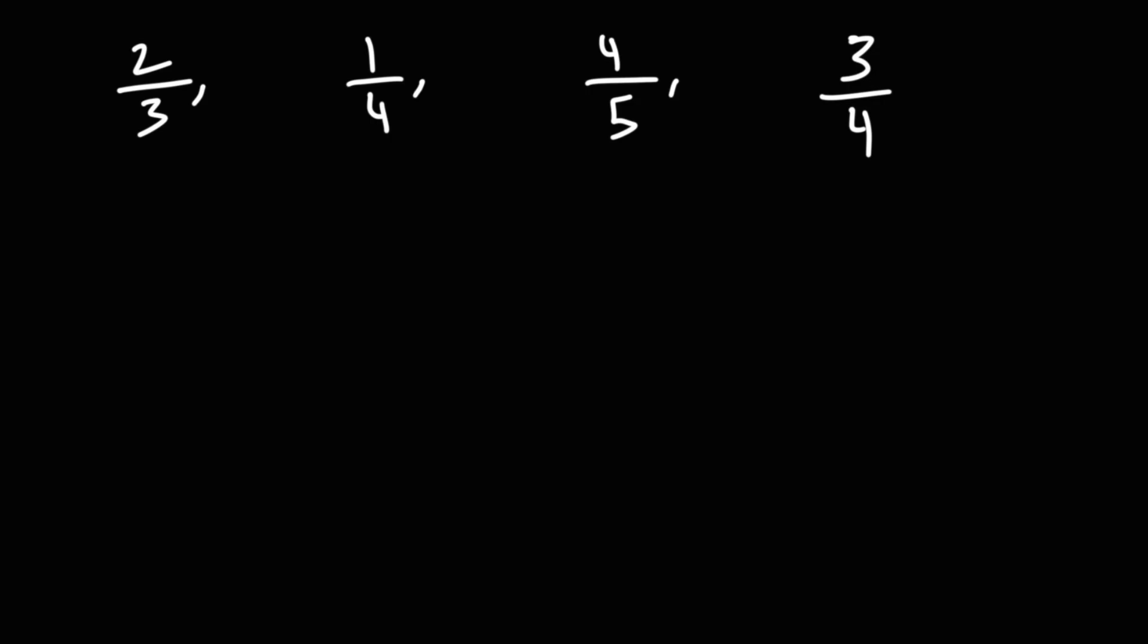Before we can do that, before we can order these four fractions, we need to get common denominators. So what I'm going to do is multiply each different denominator together to get a common denominator. This may not be the least common denominator, but it will definitely be a common denominator. Even though we have four in two fractions, I'm only going to use it once when trying to get a common denominator.